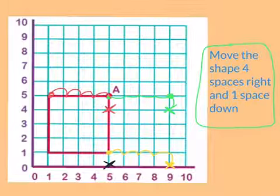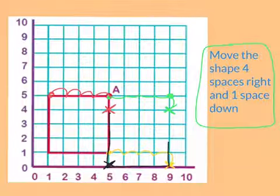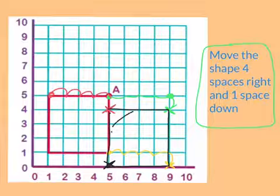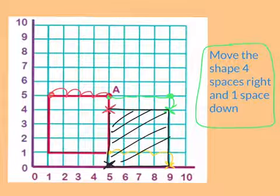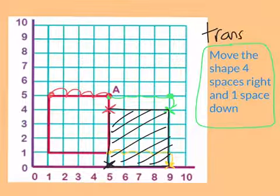And then the last thing I have to do is draw the square. And this is exactly the same size as my previous shape. It has just been shifted or translated across.